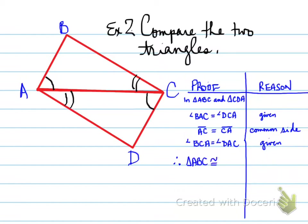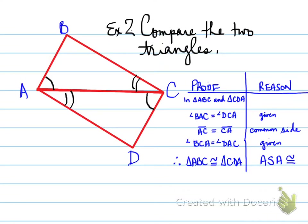Therefore, triangle ABC is congruent to triangle CDA because of angle-side-angle congruency. That is how you prove and reason when you compare triangles and prove congruency. We're going to leave the lesson here — focus on the handout you've been given, as we're going on to similar triangles in our next lesson. All right folks, have a great day, take care.